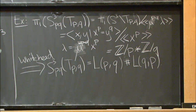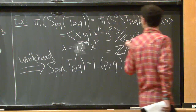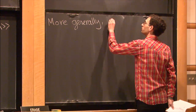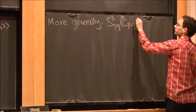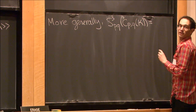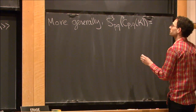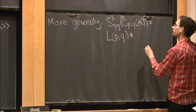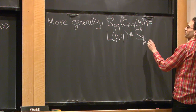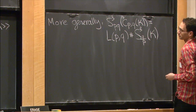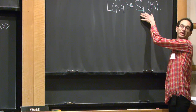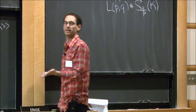Let me point out one more example. If we do pq surgery on a (p,q) cable of K—winding longitudinally p times—we get L(pq, ·) connect sum a surgery on the companion knot K. So in fact we can get things like lens space connect sum a hyperbolic manifold if we pick a hyperbolic knot with lots of hyperbolic surgeries.